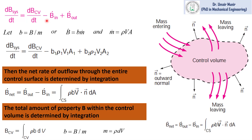B can be mass, momentum, or energy, and small b is the property of the system per unit mass. By definition we know that mass flow rate is equal to rho times v times area A. So we can write the above equation in the form of mass flow rate and small b, where subscript 1 is for the inlet and subscript 2 is for the outlet.